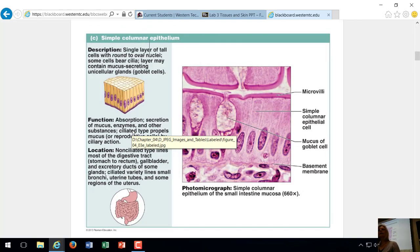Simple columnar, how many layers of cells? One layer. And columnar means they're tall, column-shaped cells. Think of them as like columns, tall, narrow. So simple columnar.